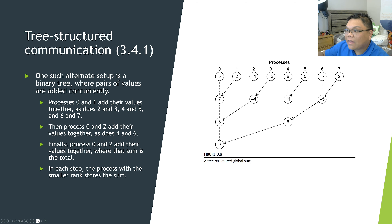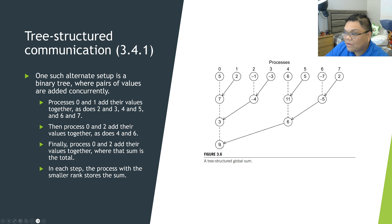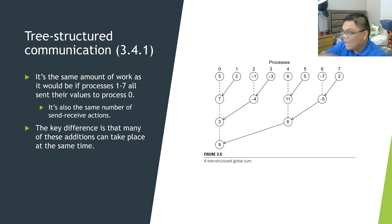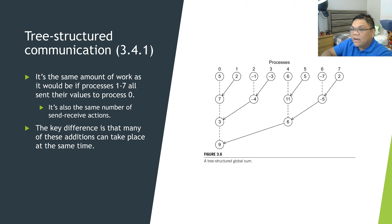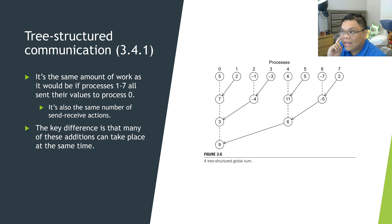Process 0 and process 4 add their values together, and process 0 now has a total area of 9. It is the same amount of work as if process 0 were to receive all messages from processes 1 to 7 and add all those local areas together. The key difference is we're doing the same amount of work in less time.